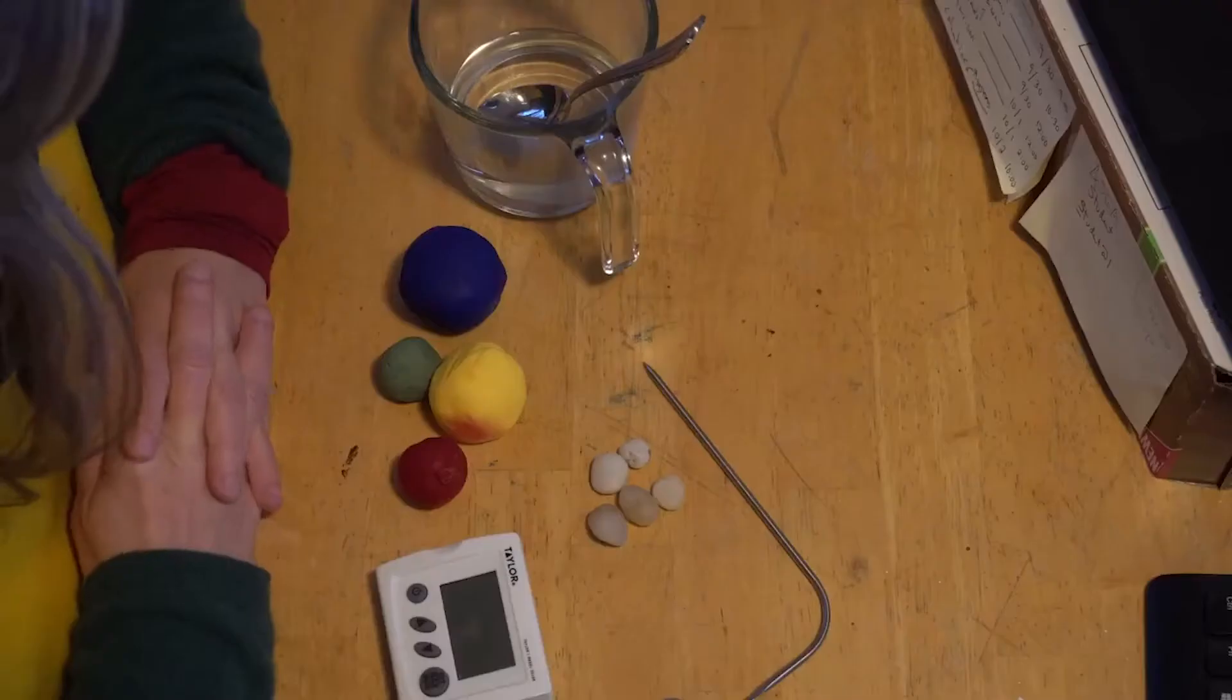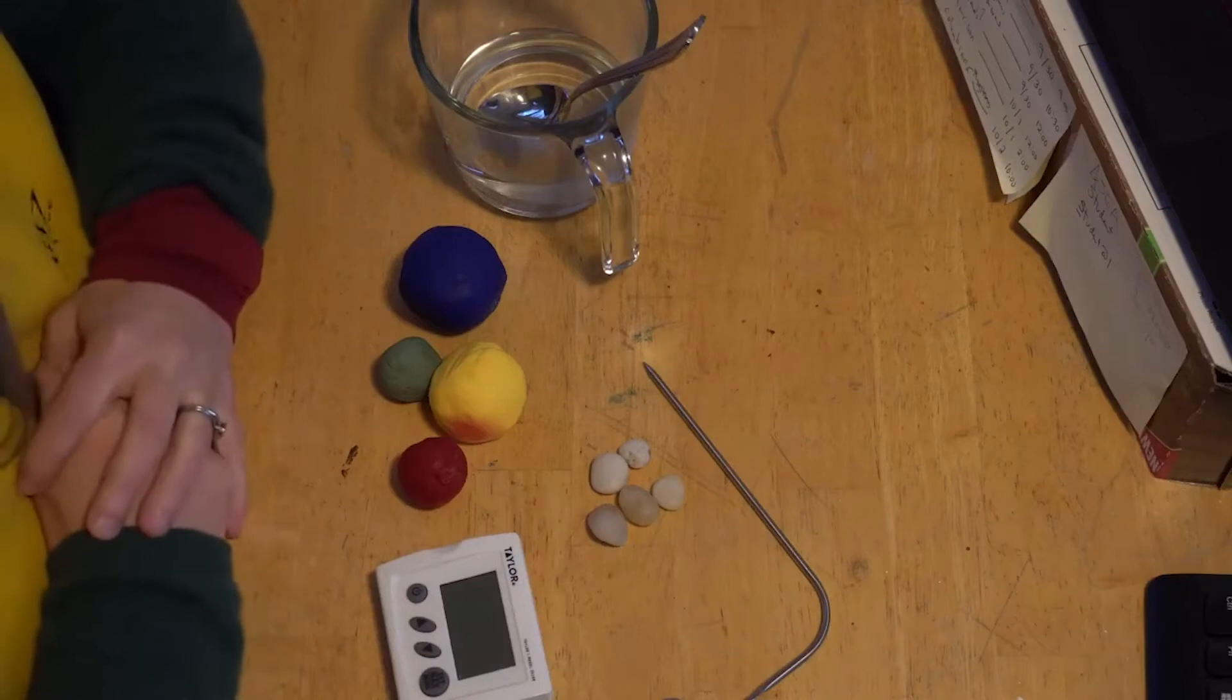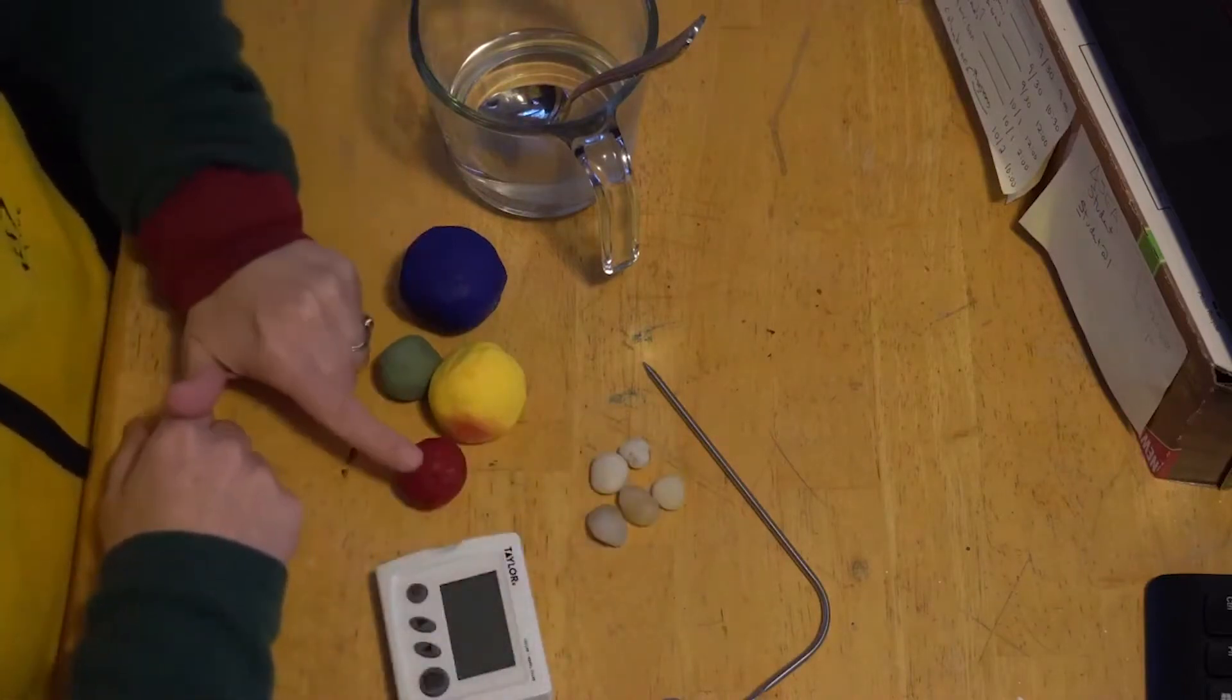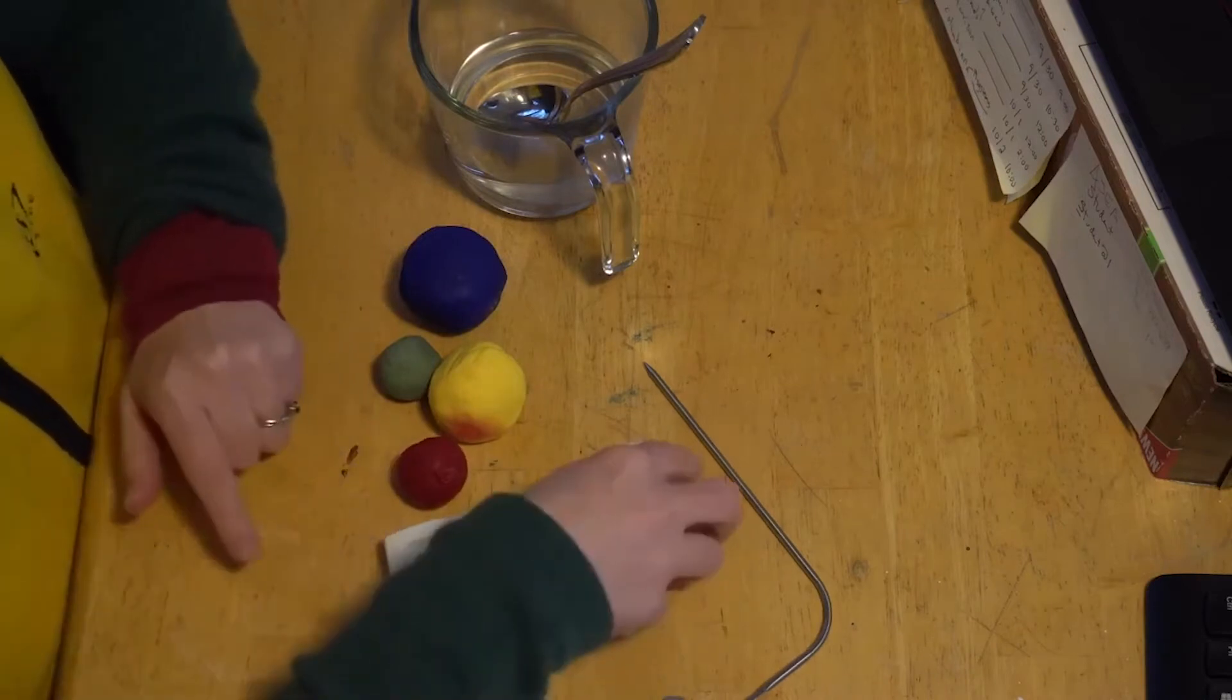Today we are going to make a model of the Earth and talk about geothermal energy. The supplies we have are hot water, rocks, four different colors of play-doh, and a thermometer.